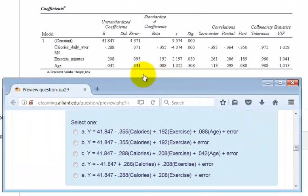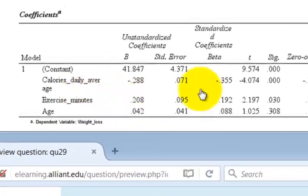So we're going to go up to this chart and look at their beta weights. So calories, beta weight, negative 3.55 significant. Exercise, less than 0.5 significant.